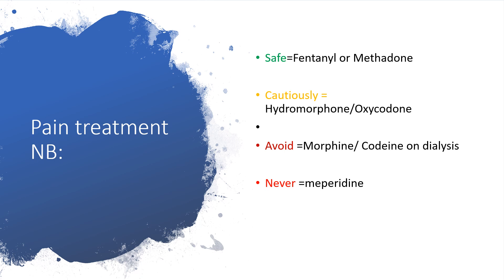There will likely be pain, and we need to be careful with pain management. Some opioids are safe in end-stage renal disease: fentanyl and methadone. Use hydromorphone or oxycodone cautiously. Please avoid morphine or codeine in anyone on dialysis. Never, never, never use meperidine.